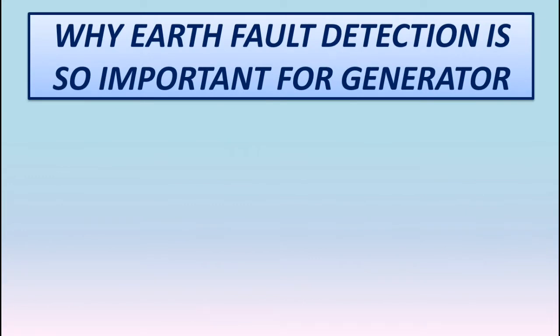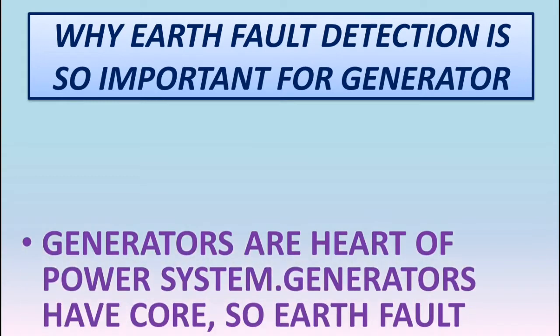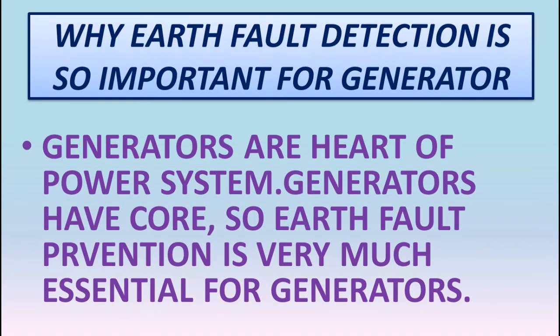Why is earth fault detection so important for generators? Those machines which have core material — like motors, transformers, and generators — are very prone to earth fault and their earth faults are very severe. If any phase conductor is damaged and connected to the core material, since the core is earthed, the earth fault current will flow through the core. The core is designed to carry the magnetic flux, not the fault current. So if a high amount of fault current passes through the core, it will eventually damage the core. That is why it is very much essential to detect the earth fault for such machines which have core material.